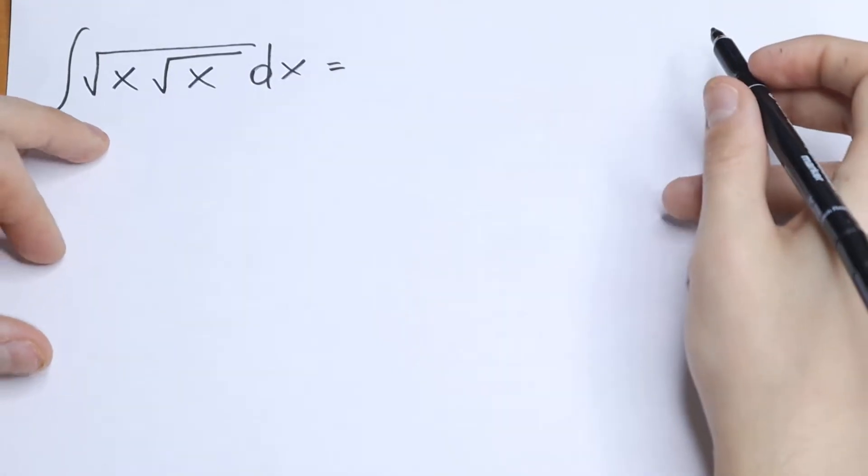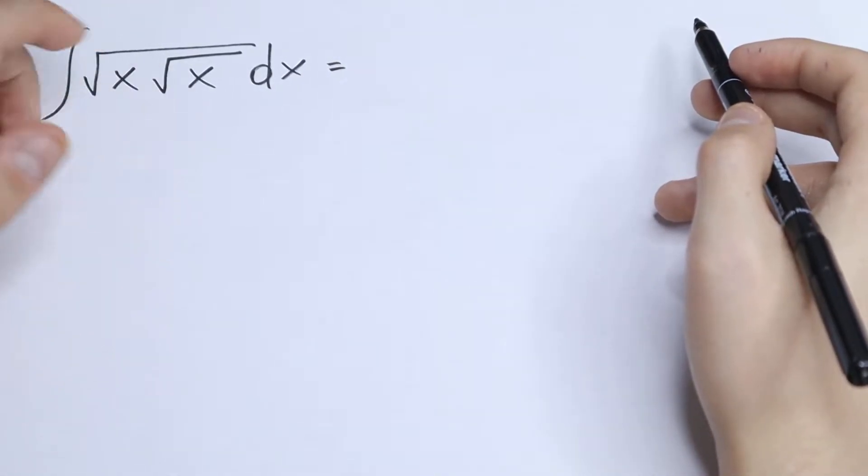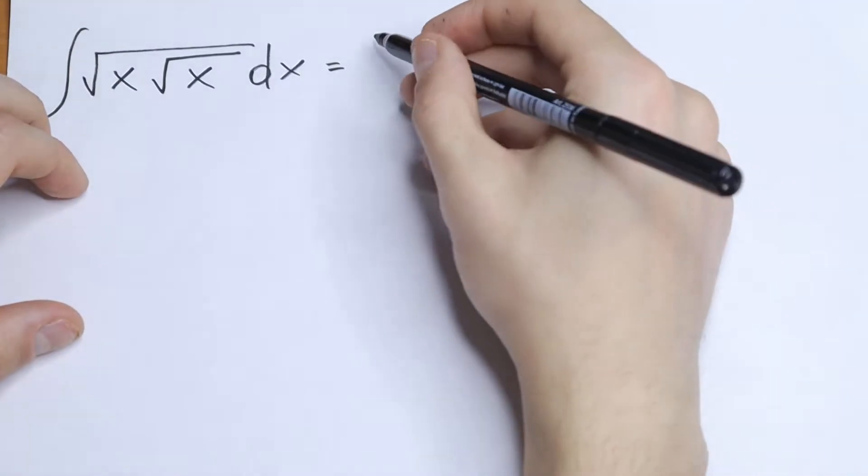How can you solve this? On the first side, this integral is really hard because we have two square roots, but we have only one x, so this is good for us.